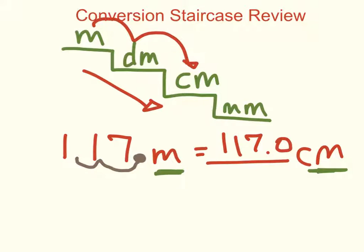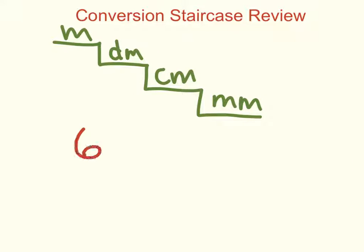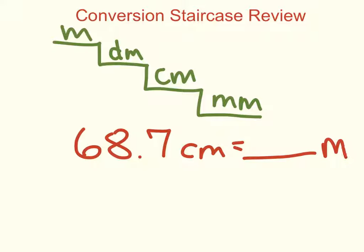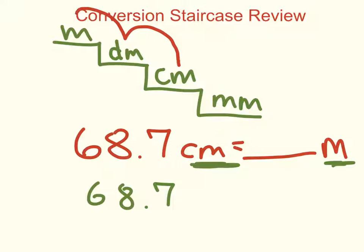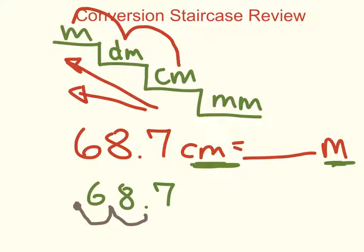Let's do another example. Let's take 68.7 centimeters and change that to meters. I'm going from centimeters to meters — that's two steps up on the conversion staircase, so my decimal moves two place values to the left. My decimal moves over two steps, and my new number becomes 0.687. So 68.7 centimeters is equal to 0.687 meters.